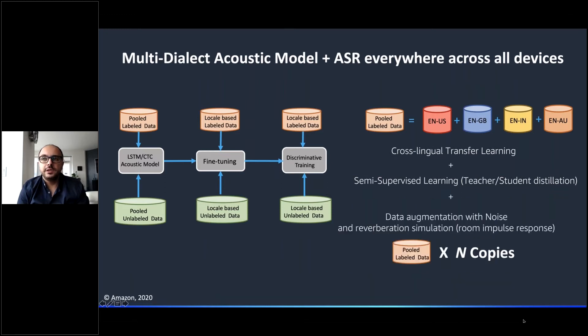We also have to be, besides cross-lingual transfer learning, we have to also be cognizant about robustness to different noise and room responses. Our story there is to use data augmentation techniques to use noise and reverberation simulation to augment our data.